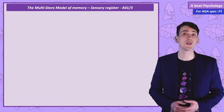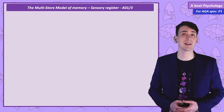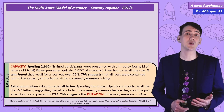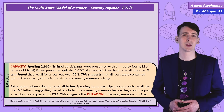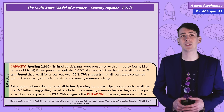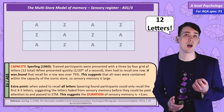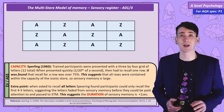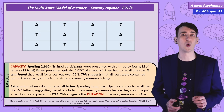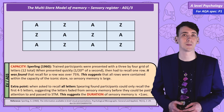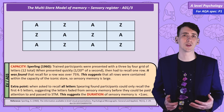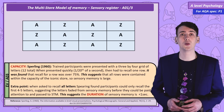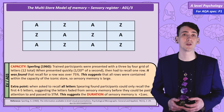The first feature of the stores I'm going to evaluate is the capacity of the sensory register, and this was a study by Sperling. What Sperling did was flash a grid of 20 letters onto a screen for a twentieth of a second, and then got participants to immediately recall one row of letters. Because it would take too long to verbally identify a row, he used different tones for each row.